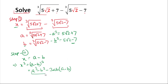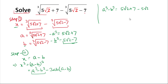From the formula, we need the value of a³ minus b³. We have a³ = 5√2 + 7 and b³ = 5√2 − 7. Subtracting: the 5√2 terms cancel, and 7 + 7 = 14. So a³ − b³ = 14.